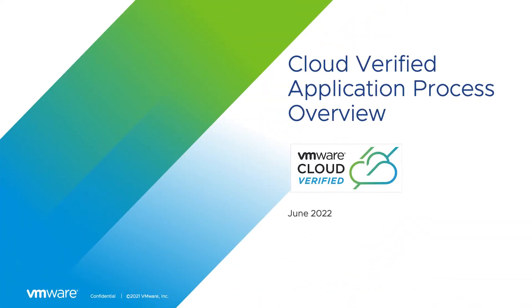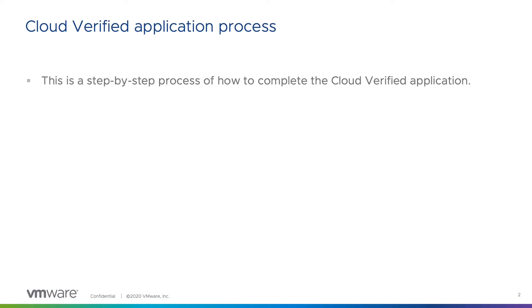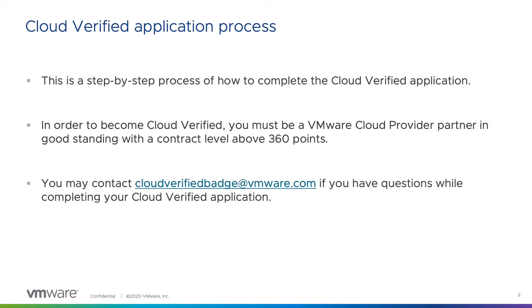Welcome to the VMware Cloud Verified application process. Today, we will be walking you through the step-by-step process of how to complete a VMware Cloud Verified application. Please remember that in order to begin this process, you must be a VMware Cloud Provider Partner in good standing with a contract level above 360 points. You can contact CloudVerifiedBadge at VMware.com if you have any questions at all while navigating through this process.